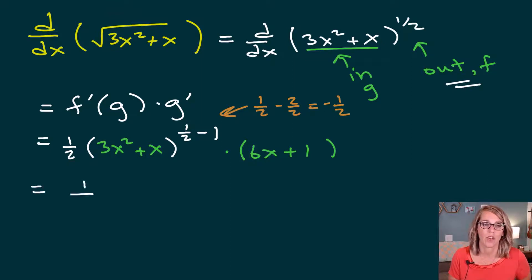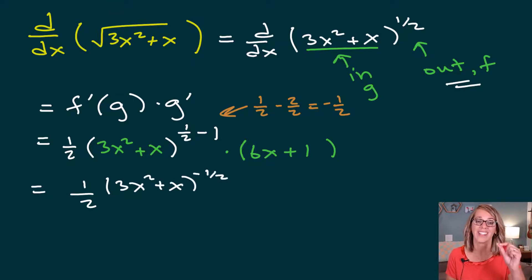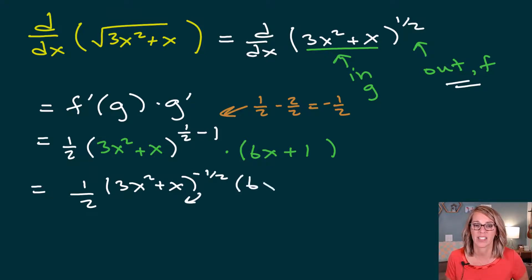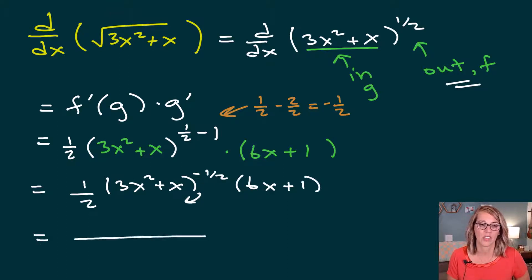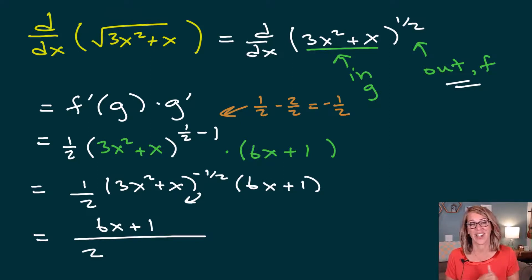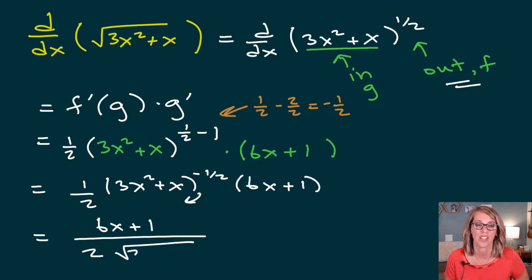So I end up with one over two times 3x squared plus x to the negative one-half power. That is going to live in the denominator. And then I've got my 6x plus one. So if I put everything into a single fraction, I have 6x plus one in the numerator, and I take that negative one-half power and bring it into the denominator as a positive one-half or a square root of 3x squared plus x.